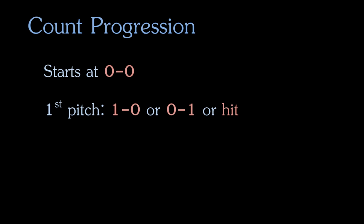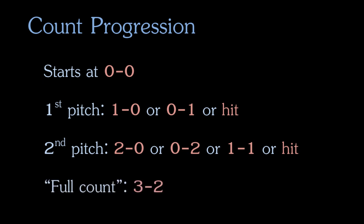If he does not hit the ball into fair territory, depending on whether the first pitch was a ball or a strike, the count could either move to 2-0, to 0-2, or to 1-1, one ball and one strike. Or again, the batter could hit the ball. So I think you can see where this is going. The batter can end the at bat by hitting any pitch into fair territory, or he can continue taking balls and strikes until it reaches three balls and two strikes, which is what we refer to as a full count.